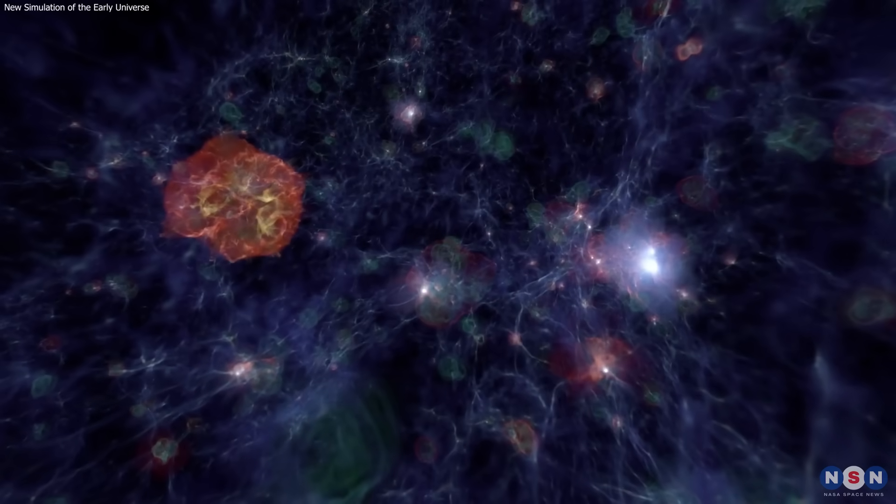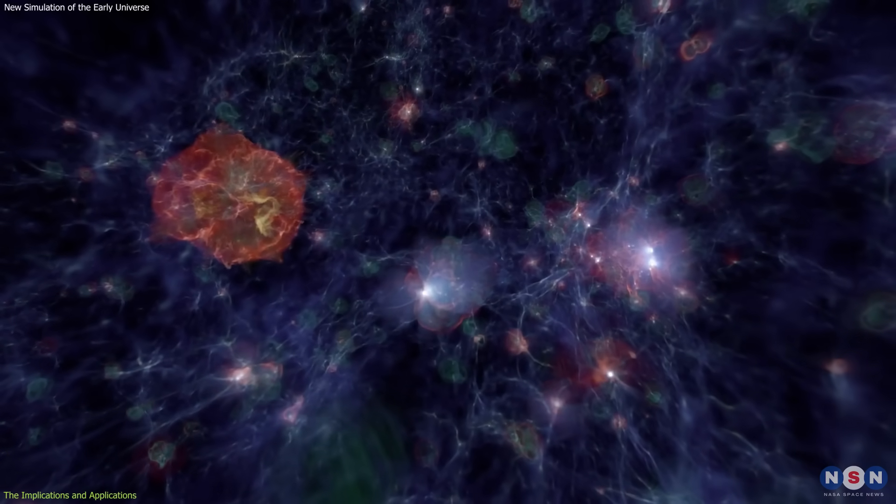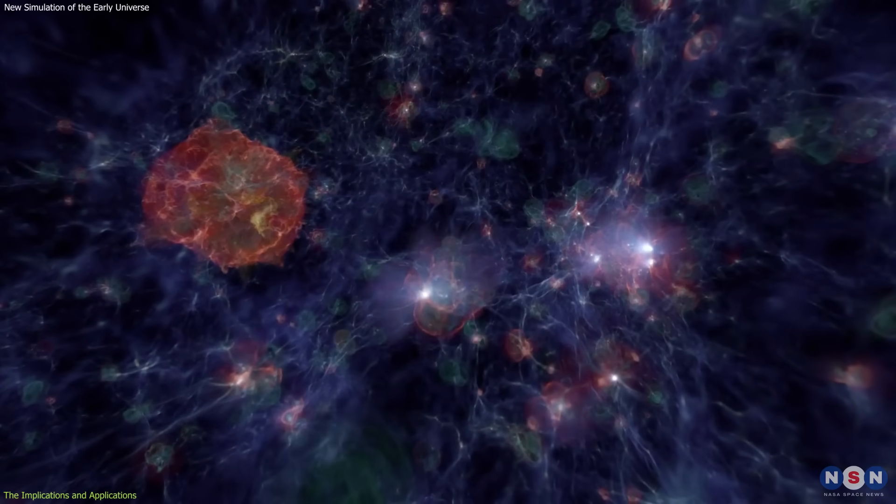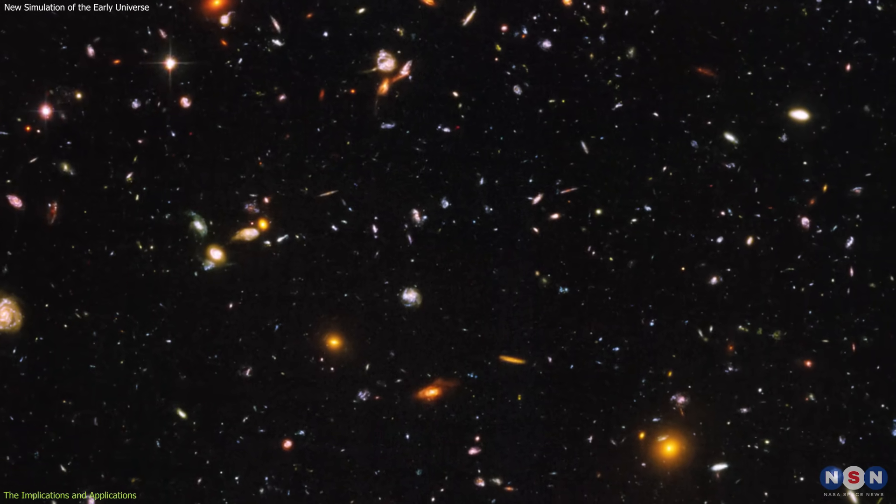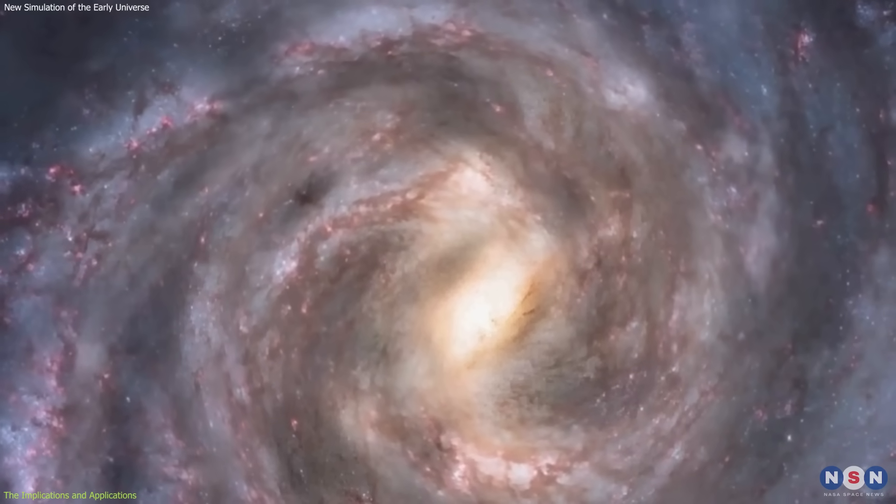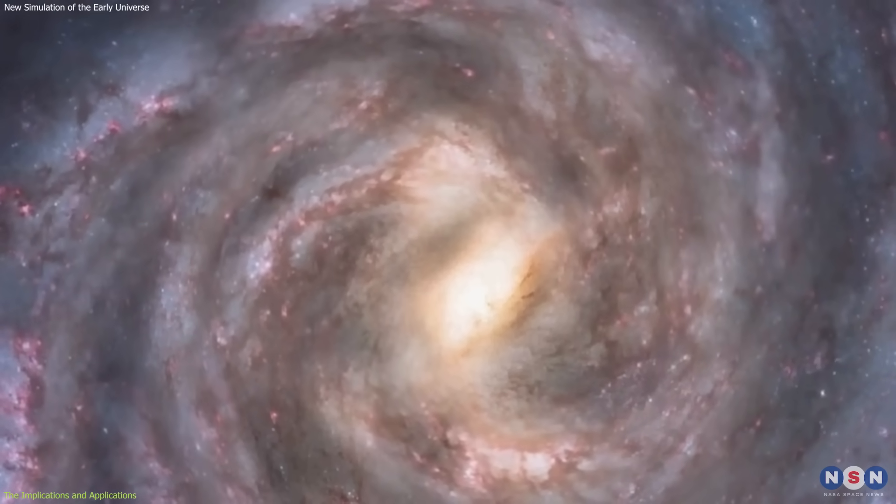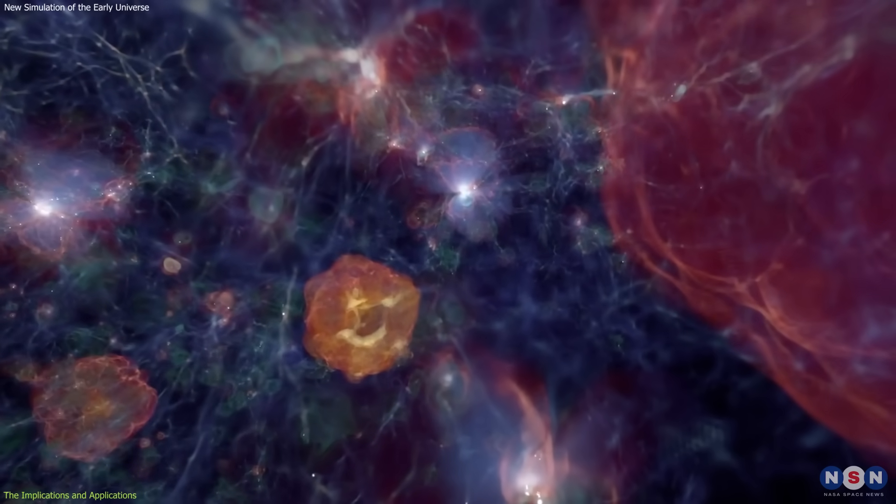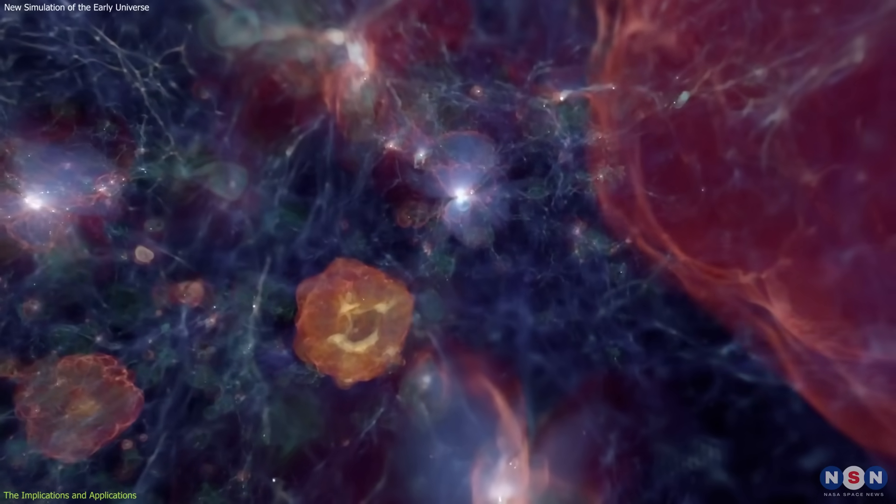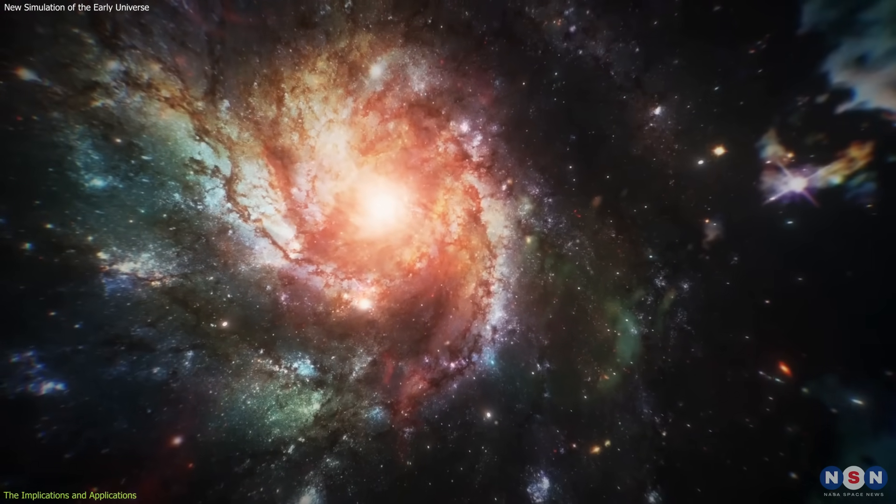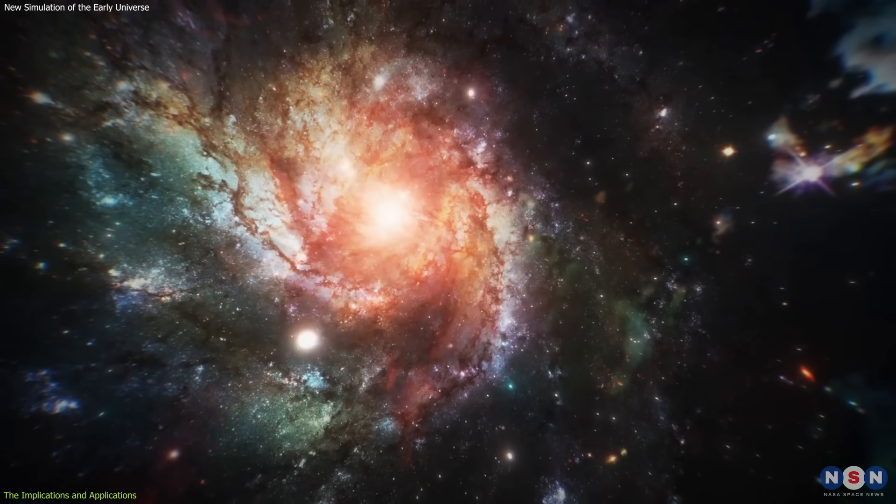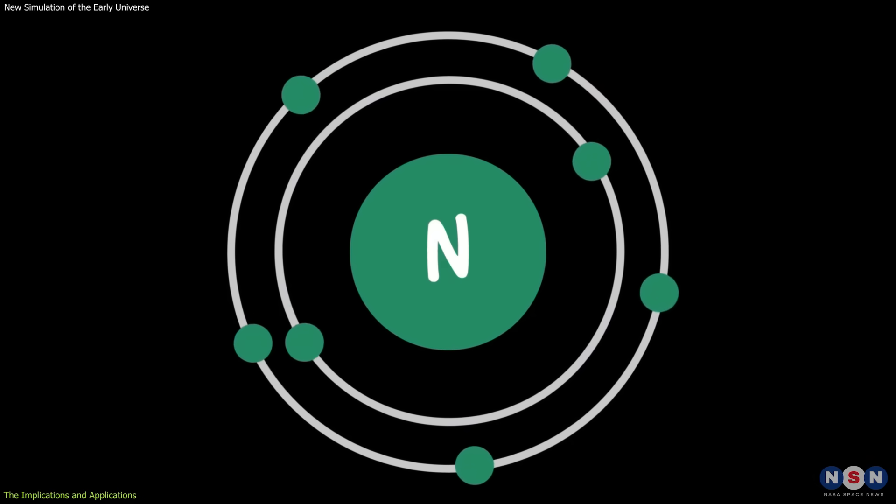One of the main implications is that this simulation can help us understand our origin in the universe. These first galaxies are the ancestors of all the galaxies that we see today, including our own Milky Way galaxy. By studying them, we can learn more about how they formed and evolved and how they influenced the evolution of the universe. We can also learn more about how they produce the elements that we are made of, such as carbon, oxygen, nitrogen, etc.